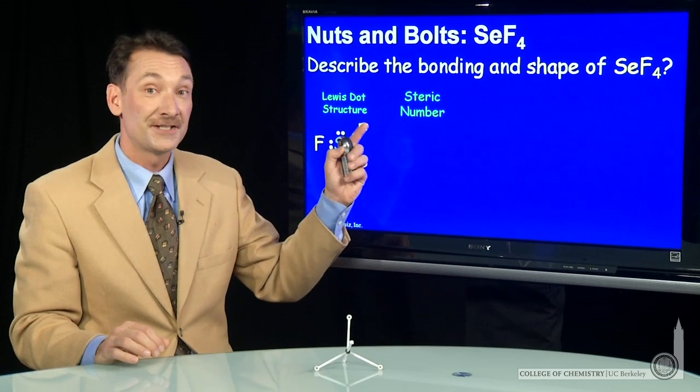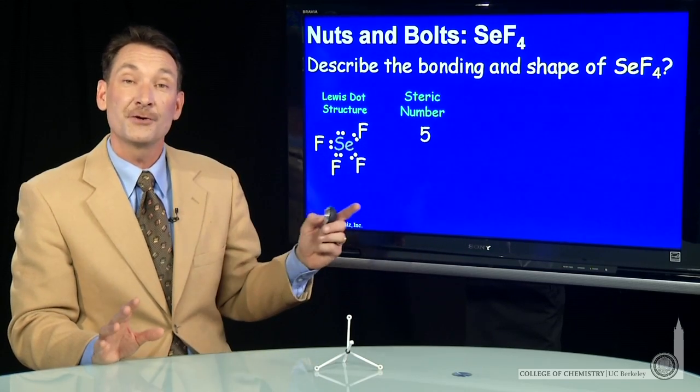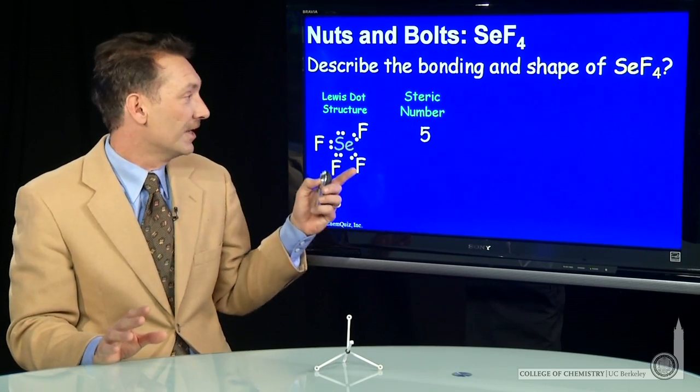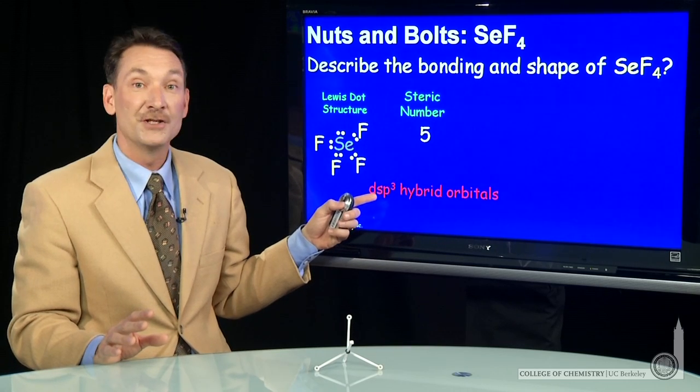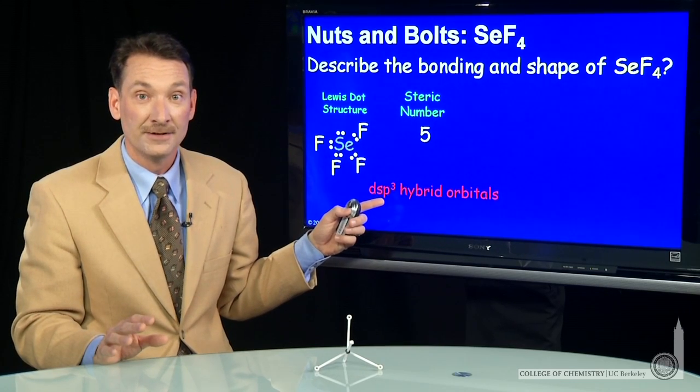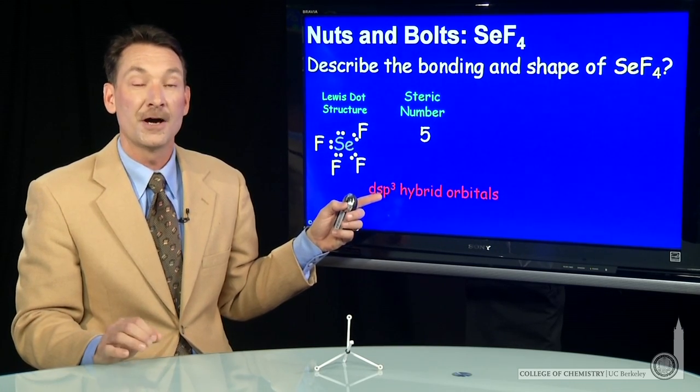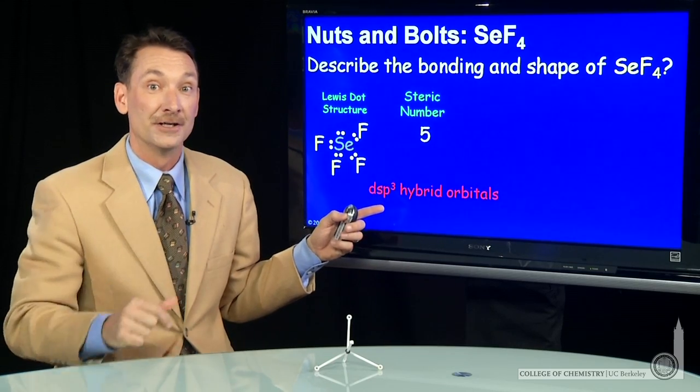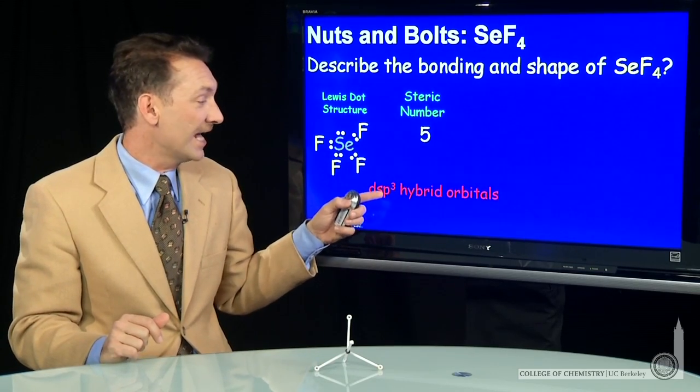Once I have the steric number, I can get to the geometry. It also gives me the hybridization. So steric number 5 means I'm going to use five equivalent hybrid orbitals. They're going to come from the five standard atomic orbitals, D, S, and 3Ps.